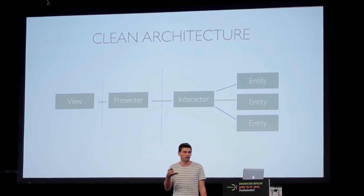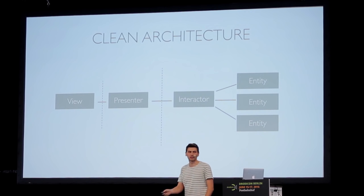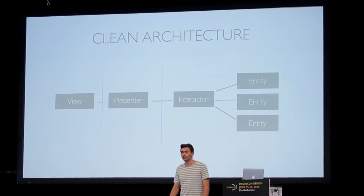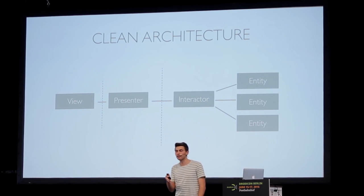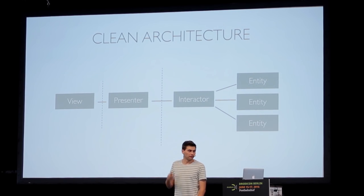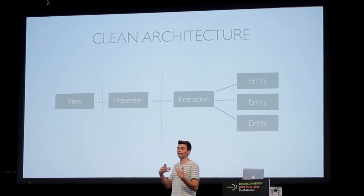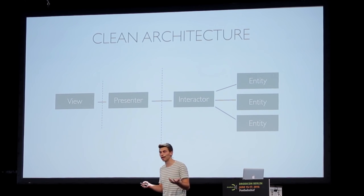Please raise your hands if you are familiar with the clean architecture. On the right you see entities — just Java objects. Then there is an Interactor and the Interactor loads entities. There's a dotted line meaning there's a boundary — an interface. Then the Presenter gets the result from the Interactor and ideally creates a presentation model.